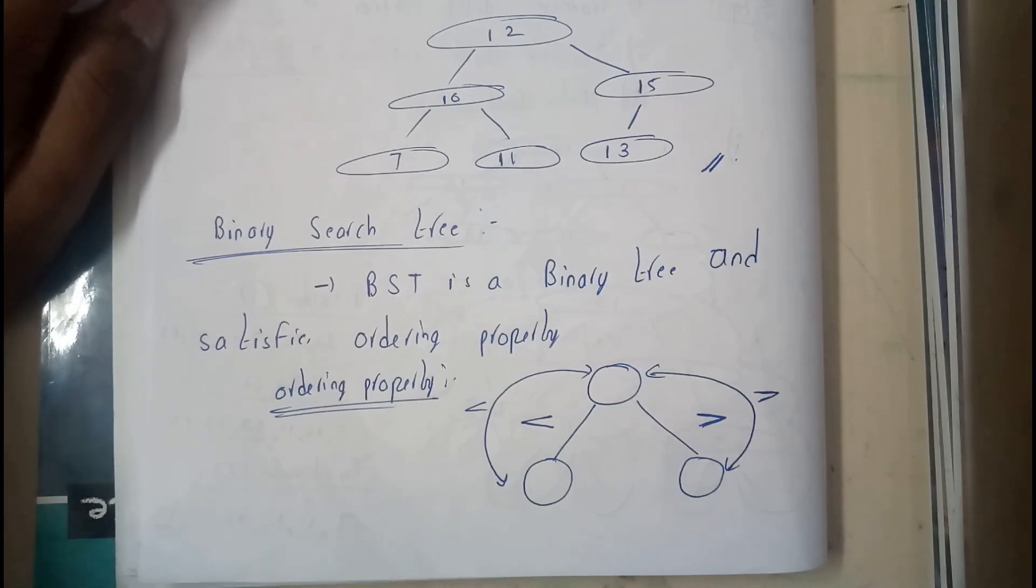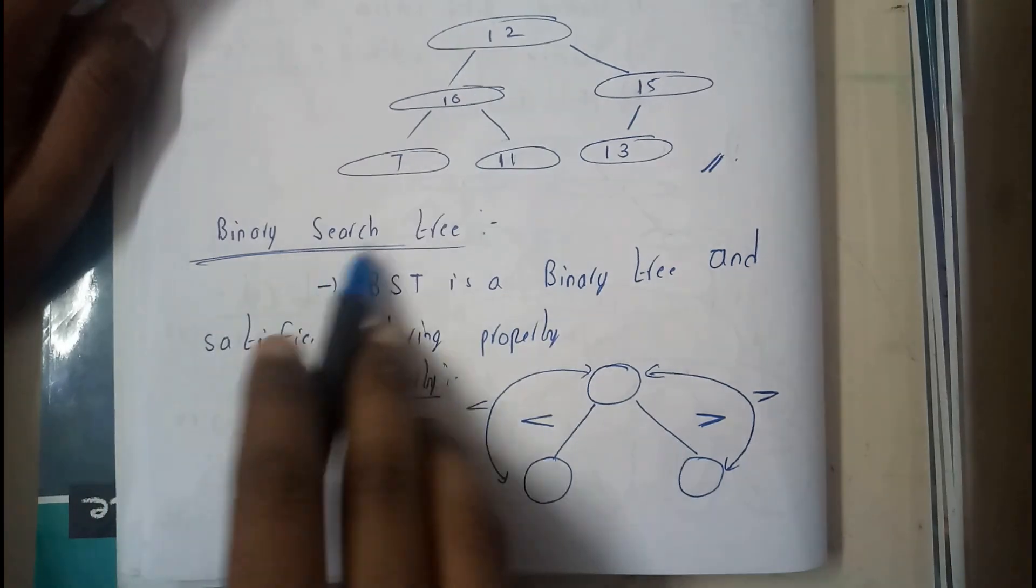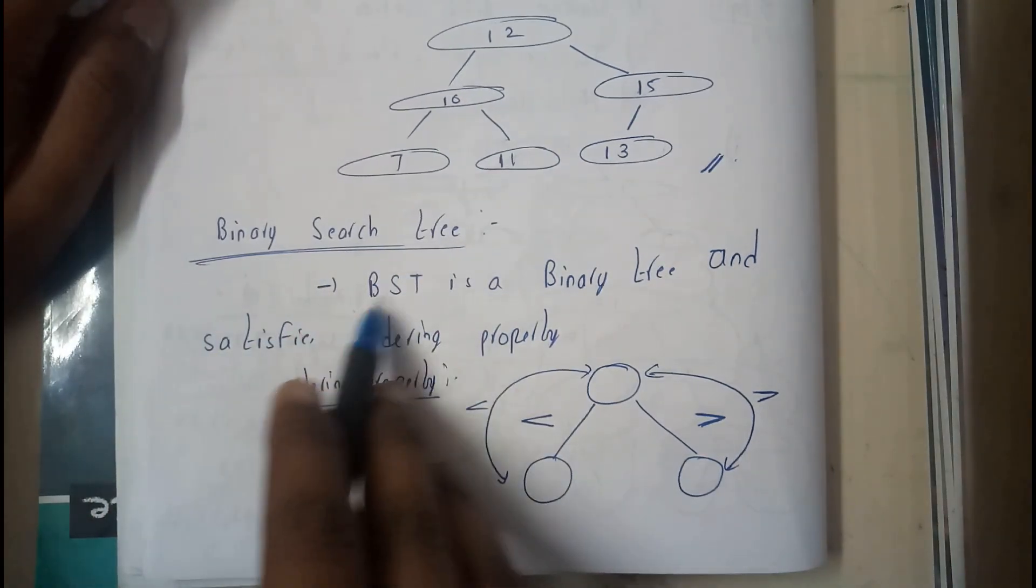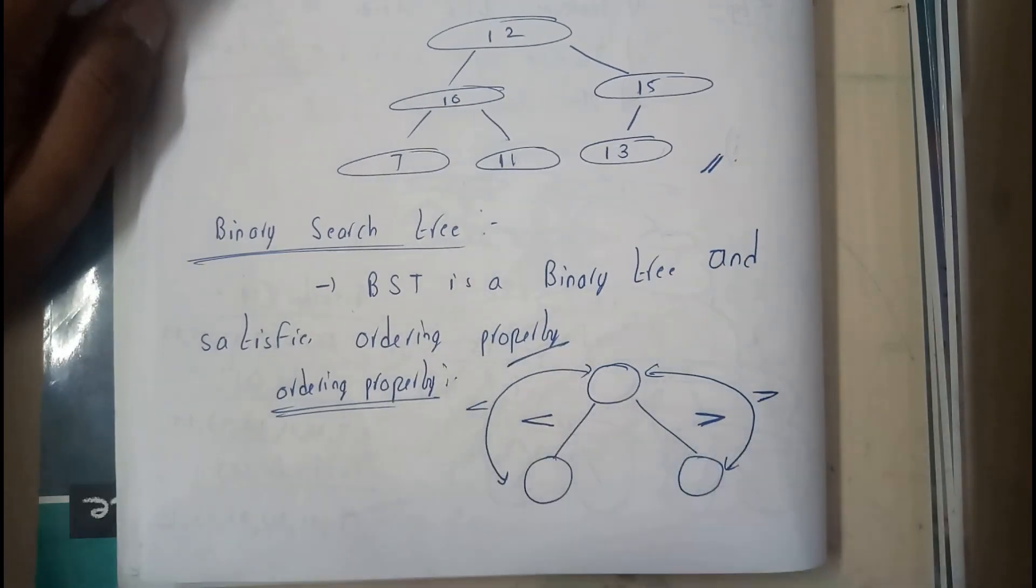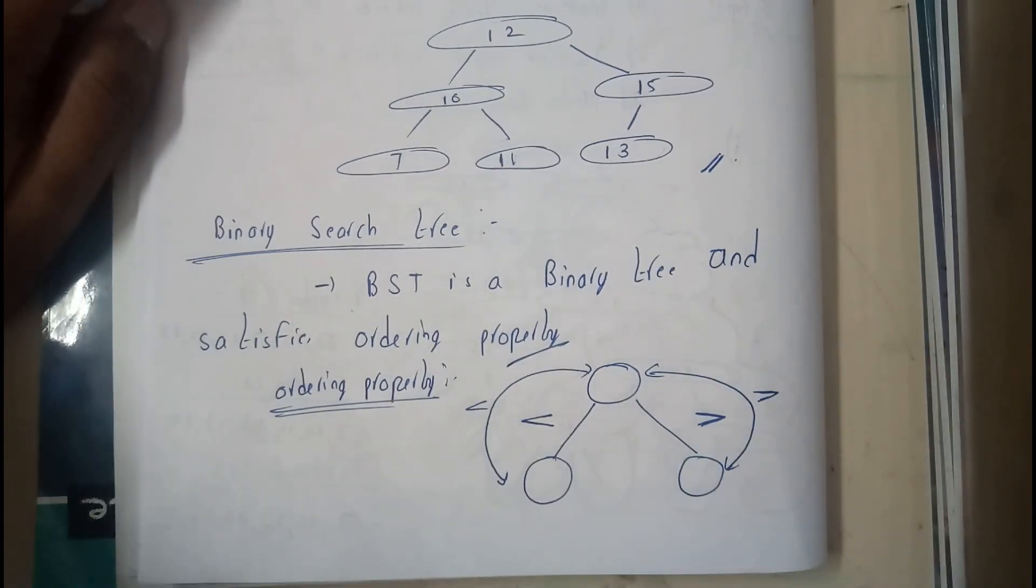Okay, so binary search tree is nothing but it is a binary tree and it satisfies ordering property. So now the question in your mind is nothing but what is ordering property.